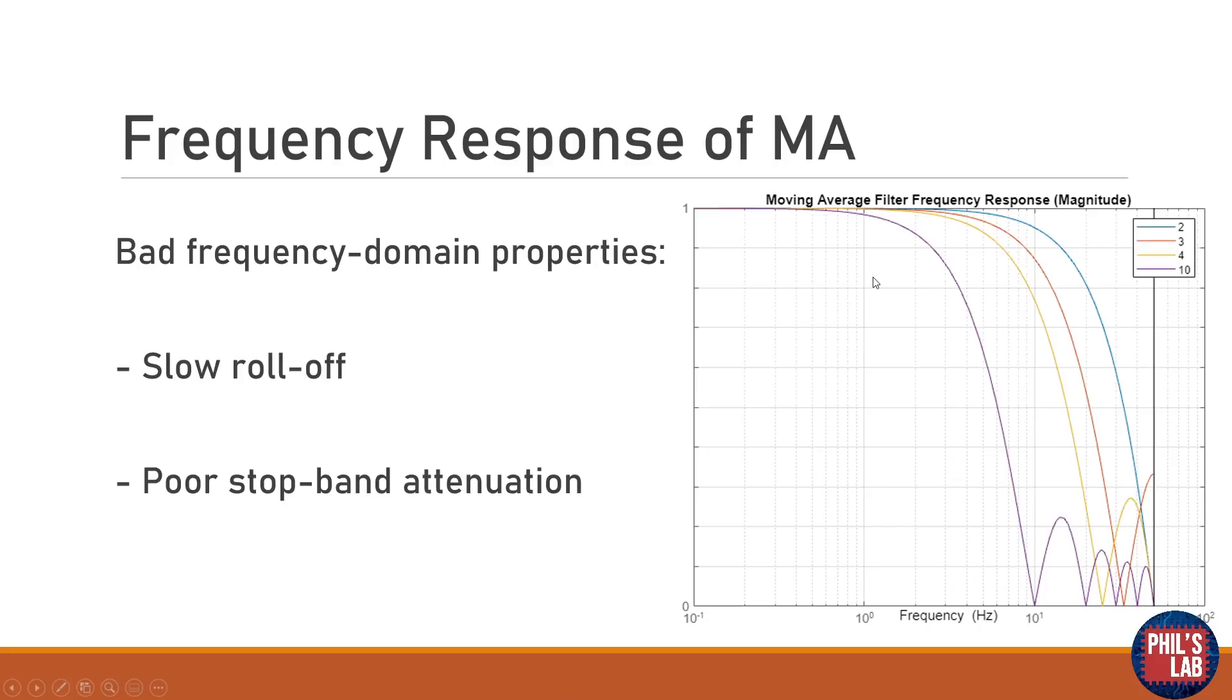However the frequency domain properties of the moving average filter in general are pretty bad. We can see we have a very slow roll off and we have pretty poor stopband attenuation, so we have a lot of ripples even in the stopband. And the moving average filter isn't great in the frequency domain but it is rather nice in the time domain and that's something we have to be aware of.